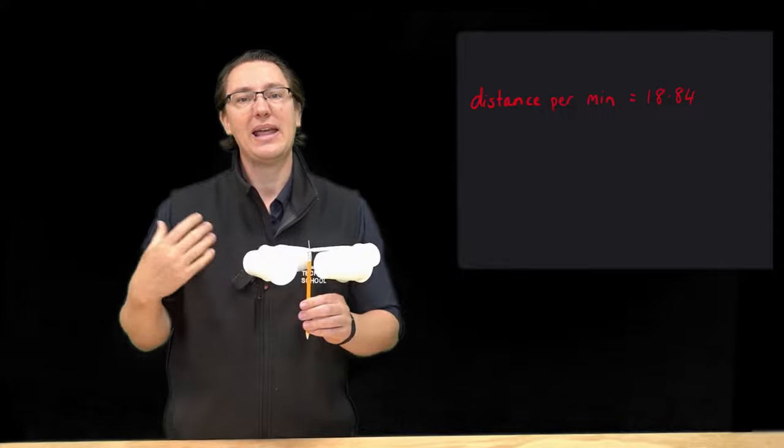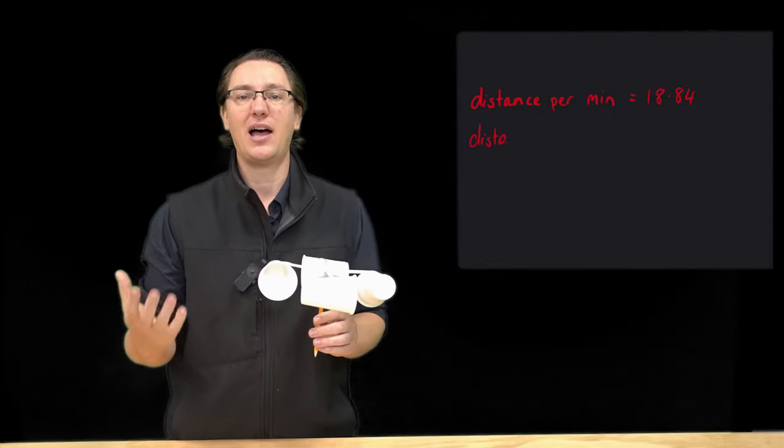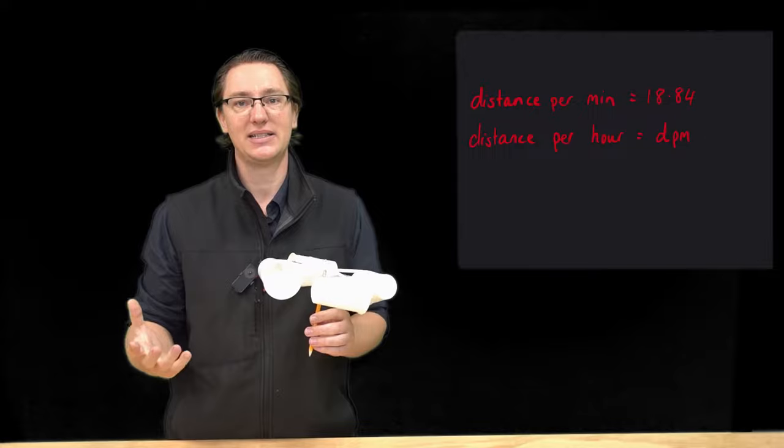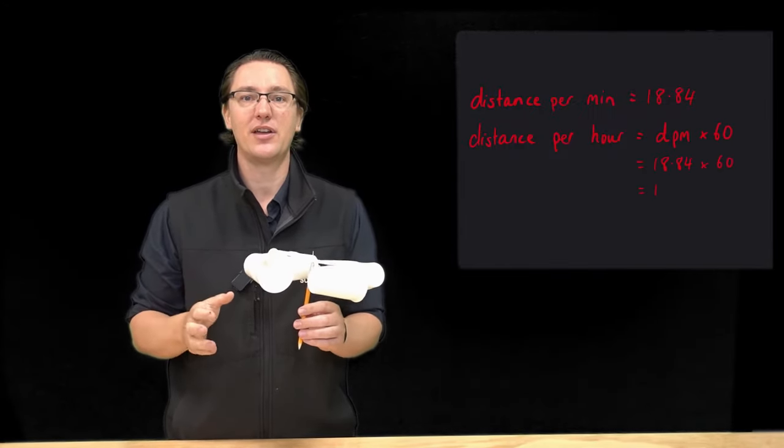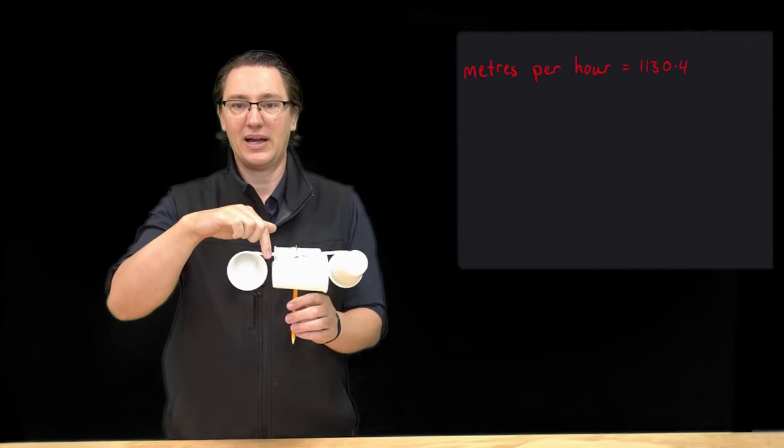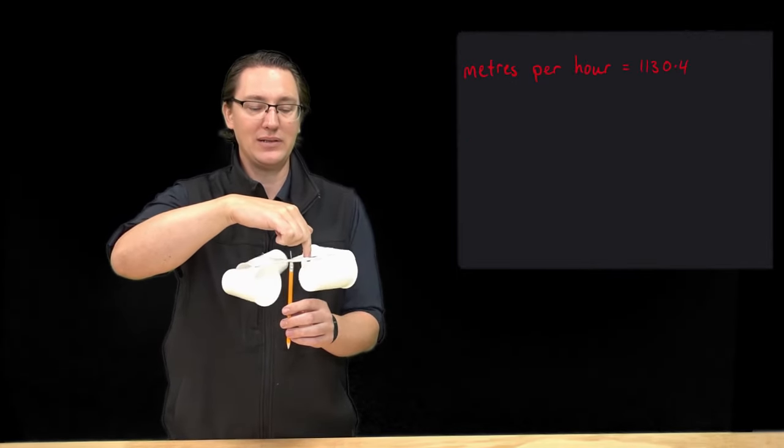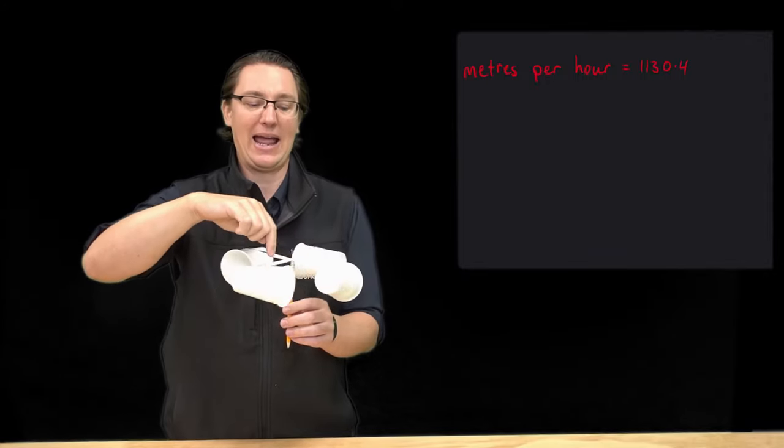Now I need to calculate that up for an hour, so I'll times that number by 60 because there's 60 minutes in an hour, and that gives me 1130.4. So my cups are traveling 1130.4 meters every hour if the wind speed is staying the same.